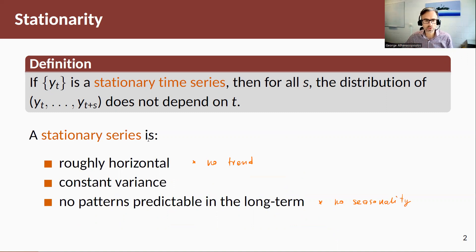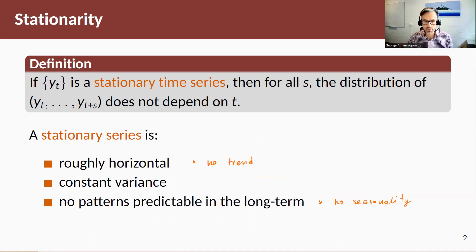Now think about the features of a stationary time series. A stationary time series is roughly horizontal — hence there's no trending behavior. It has constant variance, meaning it is homoscedastic. And there are no patterns predictable in the long term, so it does not have any seasonal components.